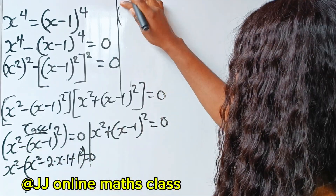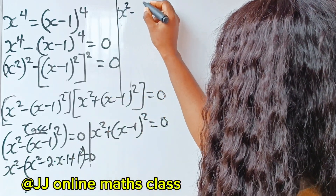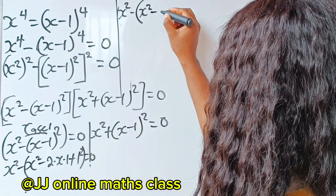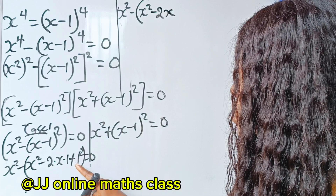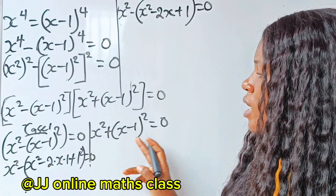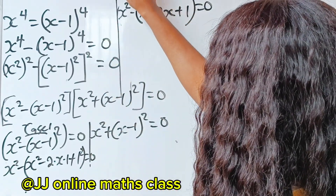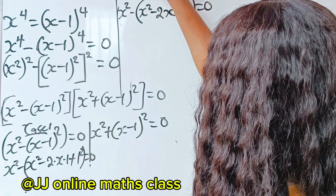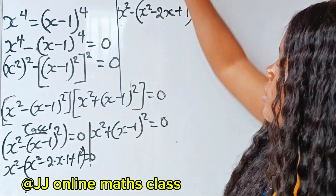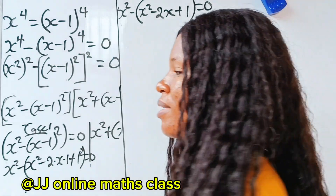This is Case 1. If we expand this further, we have x squared minus 2x plus 1, equal to 0. I'll also note Case 2 somewhere so I can refer to it later: x squared plus x minus 1 squared is equal to 0. If this is the first time you're coming across this channel, please subscribe and turn on your notification bell.